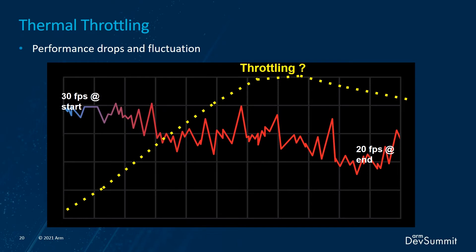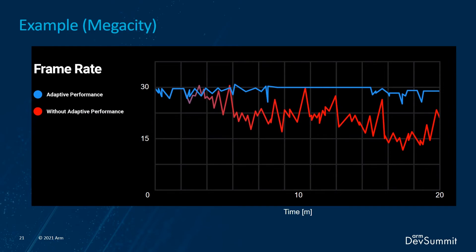Let's look at the typical thermal throttling situation. Initially a game works fine at 30 fps, but not long after, the fps fluctuates widely and moves to 20 fps over time. A high core frequency is used, which increases the temperature of the device rapidly, and thermal throttling occurs, causing a drop in performance. Does adaptive performance actually work? In red we see the frame rate of the Megacity demo before adding adaptive performance. In blue, this is with adaptive performance added — stable at 30 fps for a much longer time. Even after arriving at the most demanding part of the demo, performance stays quite stable. This not only gives a more pleasant player experience, but also saves power and lets you play longer as battery isn't drained too much.